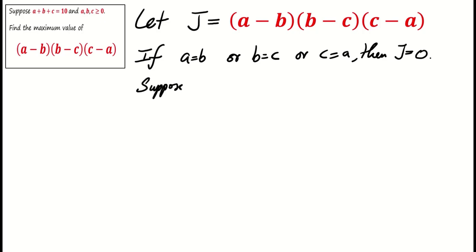For instance, with a, b, c as 5, 2, 3, J equals 6, which is greater than zero. Hence, the maximum value of J is not attained when a equals b equals c.